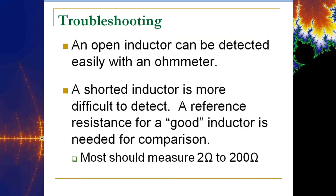To troubleshoot an inductor, you can use an ohmmeter. A shorted inductor is more difficult to detect because it operates as if it were just a piece of wire. An open inductor will not let any current flow, giving an infinite ohmmeter reading. A reference resistance for a good inductor is between 2 and 200 ohms — if you're measuring up into the megaohms, more than likely it's been damaged. That concludes the discussion on electromagnetism and inductors. Next, we'll take a look at the transient period.